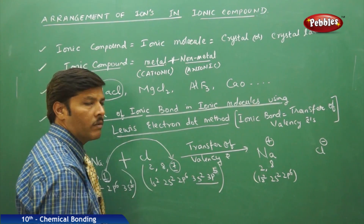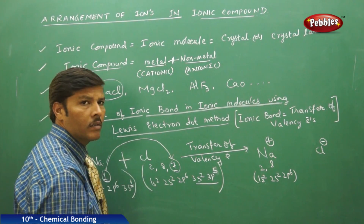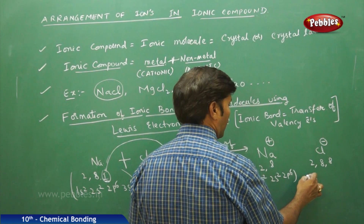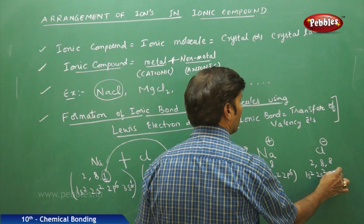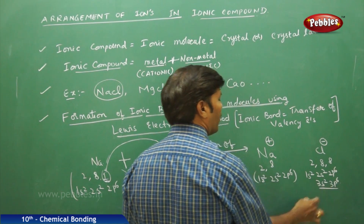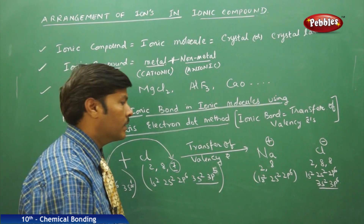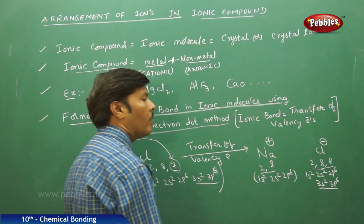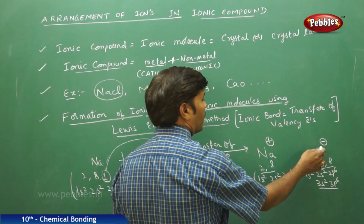Chlorine originally has seven valence electrons; the electron transferred from sodium is taken by chlorine, and now its electronic arrangement becomes 2, 8, 8 — electronic configuration 1s² 2s² 2p⁶ 3s² 3p⁶. The valence electrons of chlorine are 3s² 3p⁶. Both sodium as a cation and chlorine as an anion have now acquired stability.